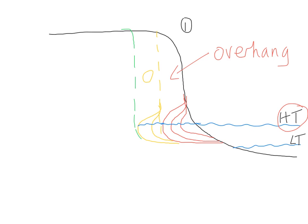The important thing is this: A, the cliff has retreated, but B, at the base of the cliff — which I'll now highlight in green — you are left with this area of flattish rock which was once cliff. This is the wave-cut platform, which you can only see at low tide. At high tide, it will be completely covered up.